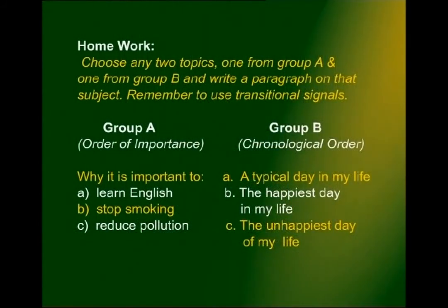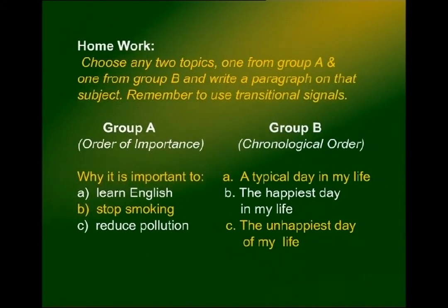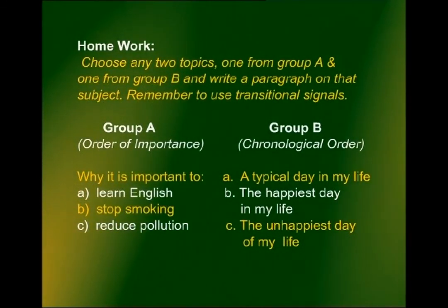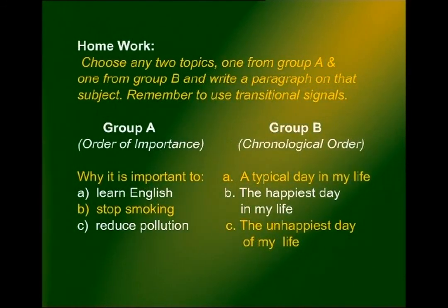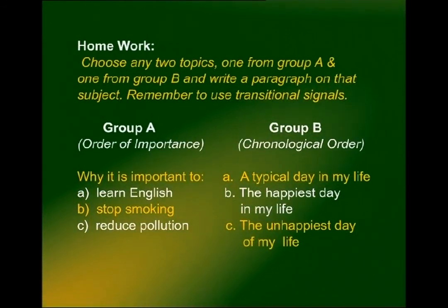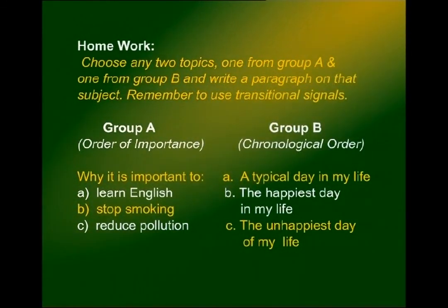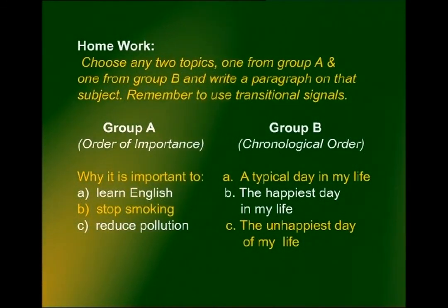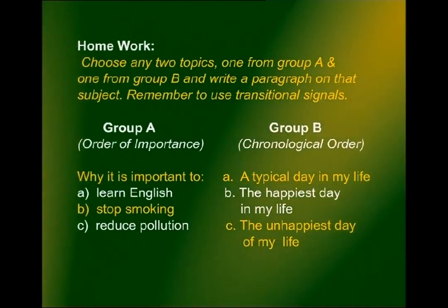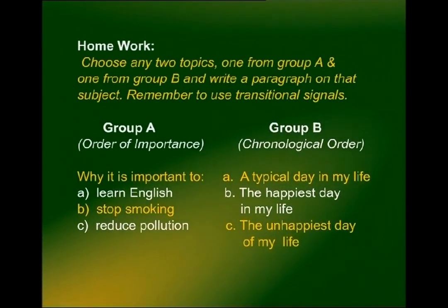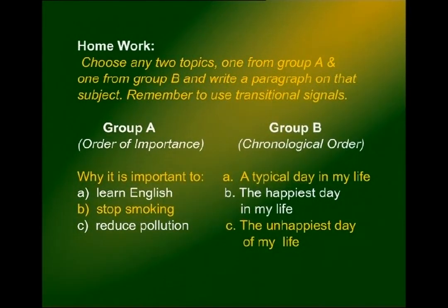For homework, you have two groups of topics. Choose one from group A and one from group B, and write a paragraph remembering to use transitional signals. Group A — paragraph organized by order of importance: write on why it is important to learn English, to stop smoking, or to reduce pollution. Group B — paragraph organized in chronological order: write about a typical day in your life, the happiest day in your life, or the unhappiest day of your life. With that, we come to the end of today's lesson. Allah Hafiz, see you next time.